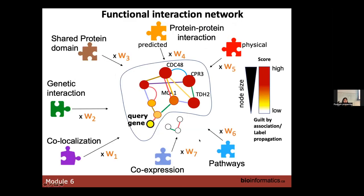Here, with the puzzle piece illustration, I've represented the different networks used by GeneMania to connect our genes. It could be physical interaction, non-physical interaction between two proteins, a predicted physical interaction, shared protein domain where each protein has the same domain, genetic interaction, co-localization, or co-expression. There is a weight associated with each, and then we construct the network.